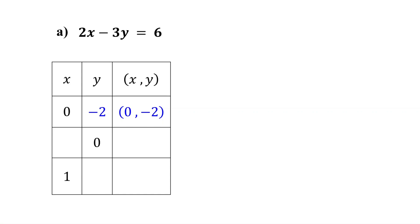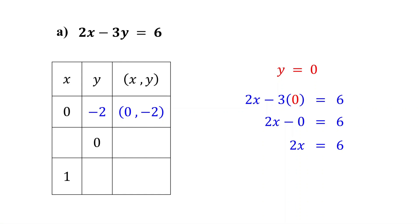Next, the value of y is given as zero, so substitute zero for y and solve for x. Three times zero is zero. Then divide both sides by two. These cancel out and six divided by two equals three. Fill in three for x in the table. So the ordered pair (3, 0) is another solution to the equation.